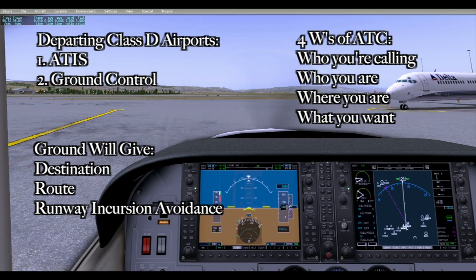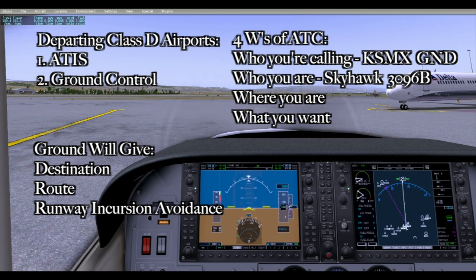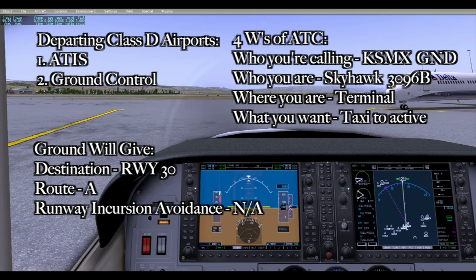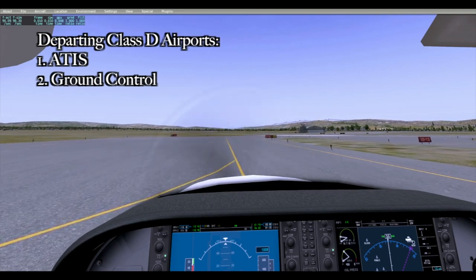Let's take a look at how I contacted Santa Maria Ground when sitting at the terminal. 'Santa Maria Ground, Skyhawk 3096 Bravo, ready for taxi to active from the terminal.' The controller responded: 'N3096 Bravo, Santa Maria Tower — Santa Maria Ground — runway 30, taxi via Alpha.' I read back: '30 via Alpha, Santa Maria, this is 3096 Bravo.' After that, we taxi our assigned route to our assigned destination, keeping open ears in case the controller wants us to take a different route.